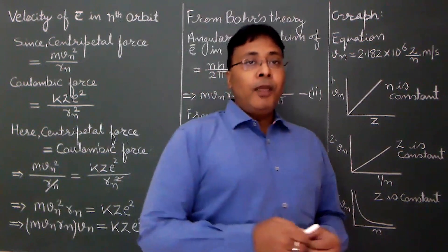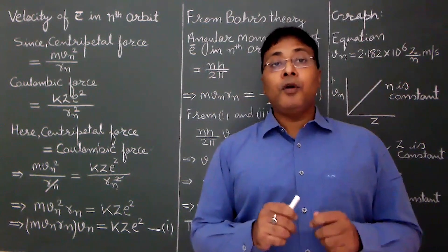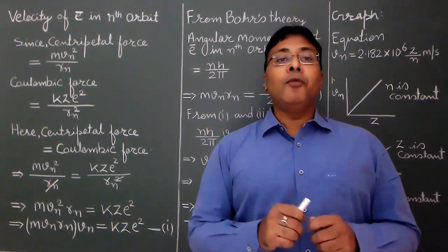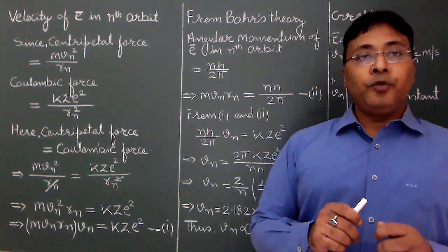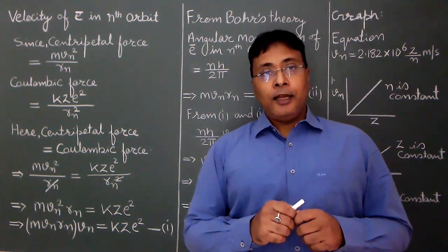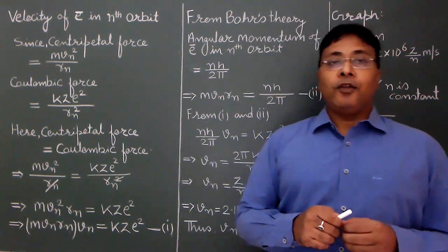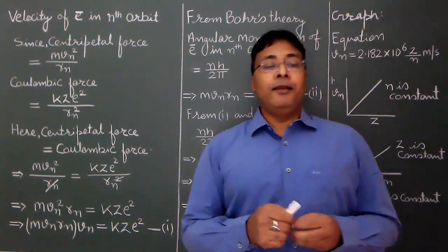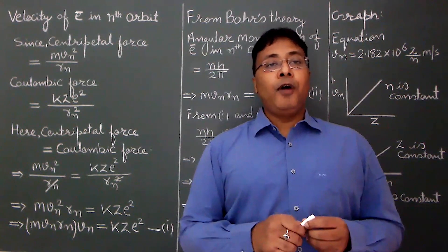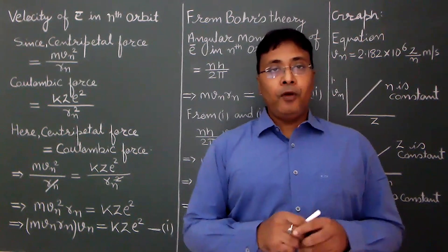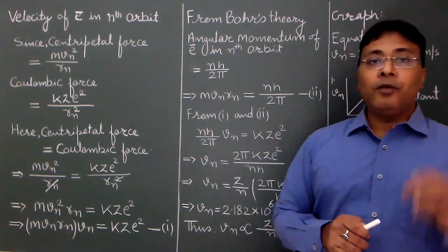From Bohr's theory, the electron revolves only in those fixed circular paths called orbits in which the angular momentum of the electron is an integral multiple of h/2π. From classical physics, the angular momentum of the electron in the nth orbit is m·vn·rn. So we get m·vn·rn = nh/2π. This is Equation 2.